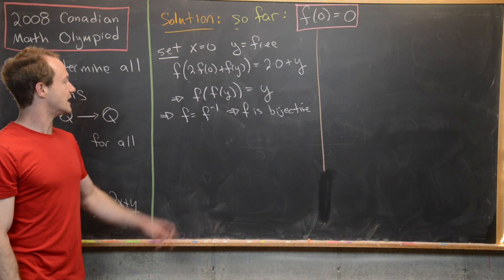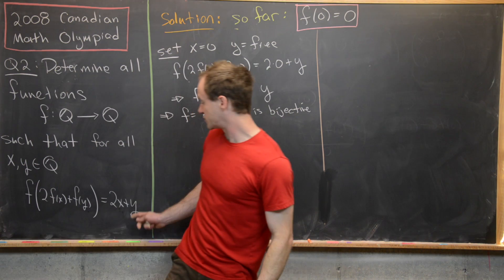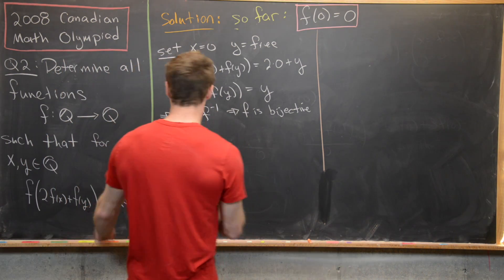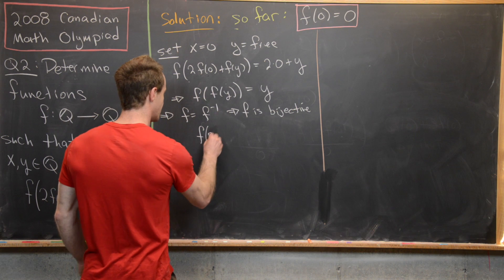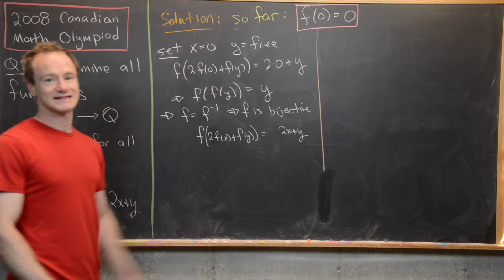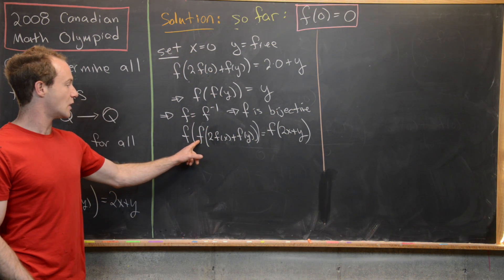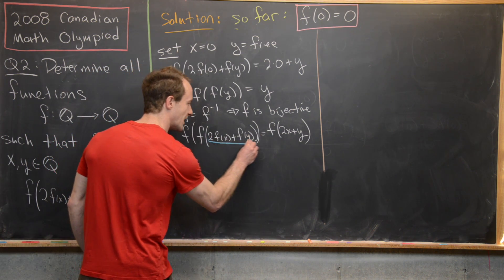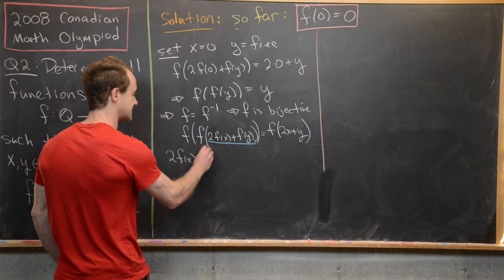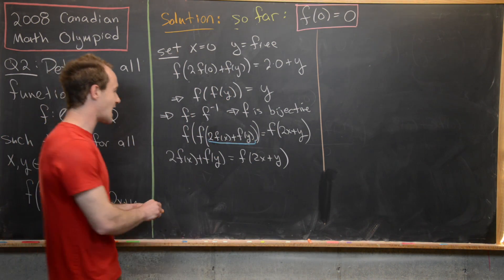Since we've got this double composition of f leading to the identity function, we can use that to our advantage by taking the given functional equation and applying f to it. The given equation is f of two times f of x plus f of y equals two x plus y. Applying f to both sides, since f composed with itself gives the identity, the left-hand side becomes two times f of x plus f of y, and the right-hand side becomes f of two x plus y. So we have: two f of x plus f of y equals f of two x plus y.